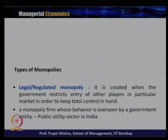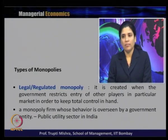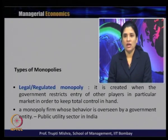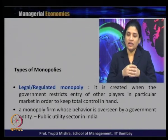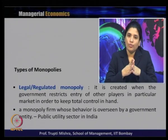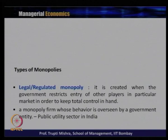Fifth is legal or regulated monopoly — created when the government restricts entry of other players in a particular market in order to keep total control. Examples include Indian Railways and different state electricity boards. The government takes all decisions regarding price and output, making the behavior overseen by a government entity. Public utility sectors typically fall under this form of monopoly.